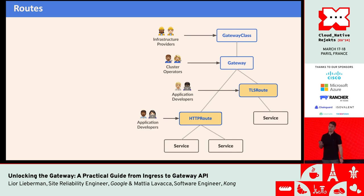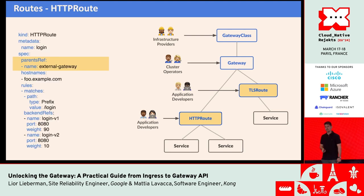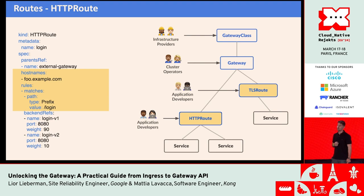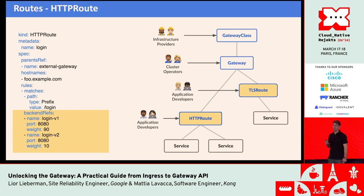Next we have routes. There are HTTPRoute, TLSRoute, and many more. Routes tell your gateway how to pass requests to your backends or services. In a simple HTTPRoute example — a login service with weight-based routing to two versions — you can see the parent reference pointing to the gateway the route attaches to, the hostname foo.example.com, a rule matching path prefix slash login, and backend references sending 90% of traffic to login-v1 and 10% to login-v2.